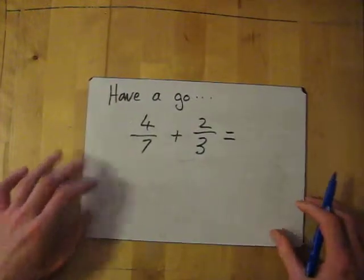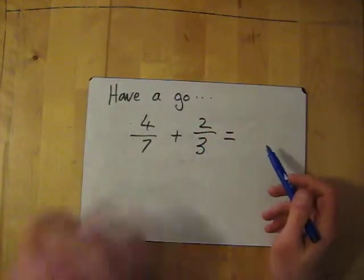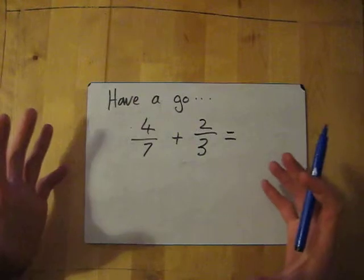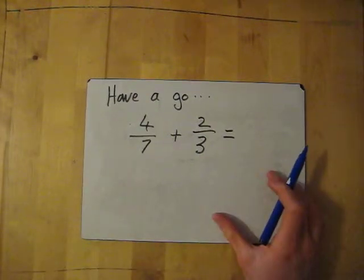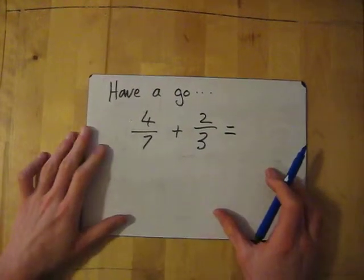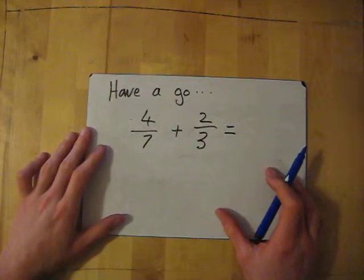Now, I'm going for you to try yourselves to have a go at this. So we've got 4/7 add 2/3. So what we want to do is find that common multiple. I'm going to have a go at it in about 3 seconds. So if you want to pause. So 3, 2, 1.